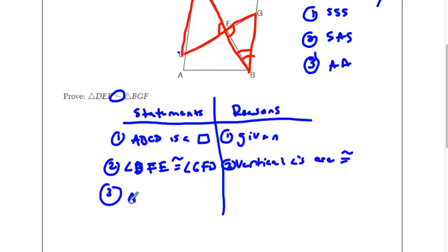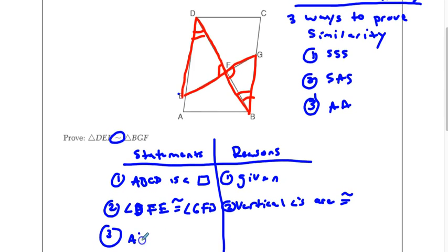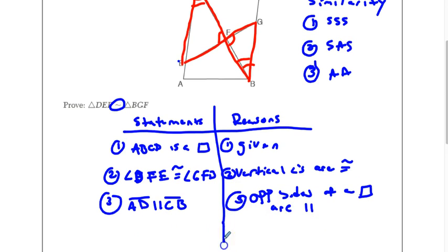So, we're going to say that AD is parallel to CB. And that's because opposite sides of a parallelogram are congruent. No. No. I did what all the students do. Are parallel.